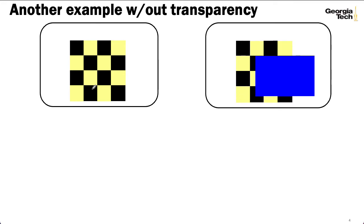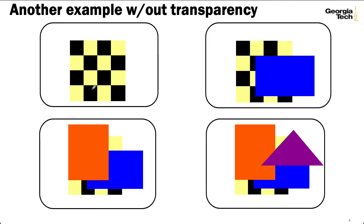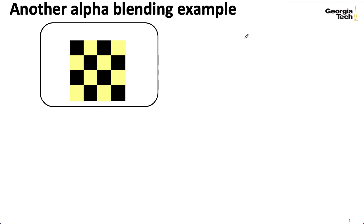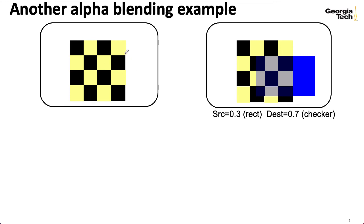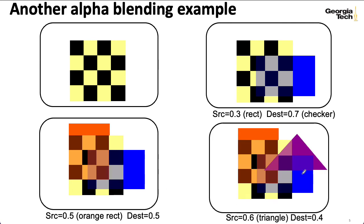Here's another example Sean cooked up with PowerPoint. Imagine you have a yellow and black checkerboard pattern, and you draw additional objects without using transparency effects — a blue rectangle, then an orange rectangle, then a purple rectangle on top. Now if you do the same drawing but use transparency, blending the blue rectangle with the checkerboard gives you some gray where the yellow and blue overlap, since blue and yellow are complementary colors that combine to gray. Drawing the orange then gives you some yellow-tinted orange, and drawing the purple produces more complicated blending effects.